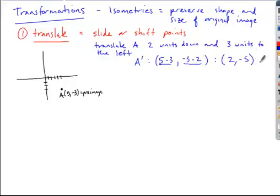And so this will be the set of coordinates for our translated image. We have the coordinates two and then down five. So two, negative five - this is A prime, the translated image.